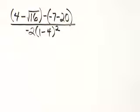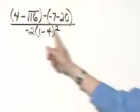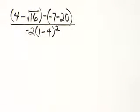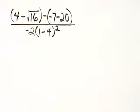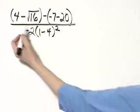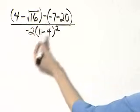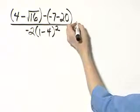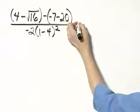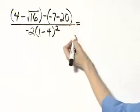Study this expression a moment and decide how you will begin simplifying. This fraction bar serves as a grouping symbol, so simplify above and below independently. Let's begin in the numerator. Notice I have two sets of parentheses, so I'll begin within those two sets of parentheses, also independently.